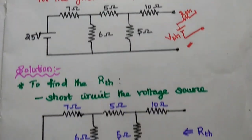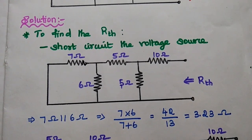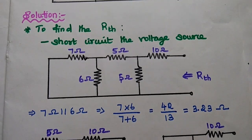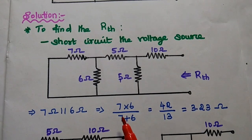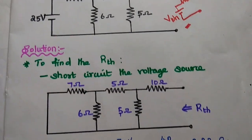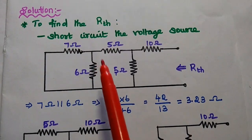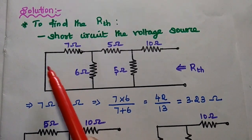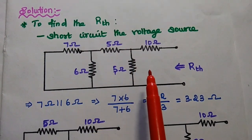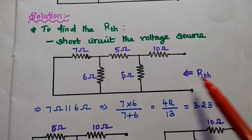In the solution part, the first step is to find out the Thevenin's equivalent resistance. The condition for Thevenin's resistance is to short circuit the voltage source and open circuit the current source in the given network. In this problem, only a voltage source is given, so we are going to short circuit that voltage source. The voltage source is short circuited and we keep the remaining resistance values as such.